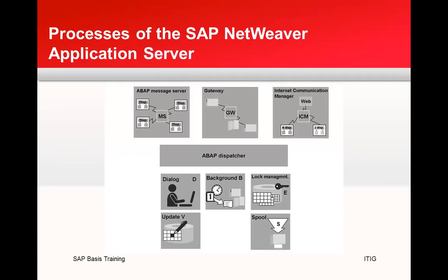Looking at the processes for SAP NetWeaver Application Server: on the far left is a message server, in the center is a gateway, and on the far right is the ICM — internet communication manager. The message server sends requests to the ABAP dispatcher. Below the dispatcher are dialogue work processes for handling user requests, alongside background processes and lock management via the enqueue work process.